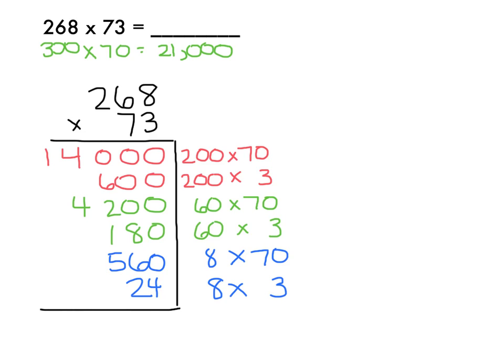Now I'm going to take all of these products, and I'm going to add them together. I'm going to get 4. 8 plus 6 is 14, plus 2 is 16. 1 plus 6 is 7, plus 2 is 9, plus 1 is 10, plus 5 is 15. 1 plus 4 plus 4 is 9, and 1 is 1. So my final answer is 19,564, and this answer does make sense because it's close to my estimate of 21,000.